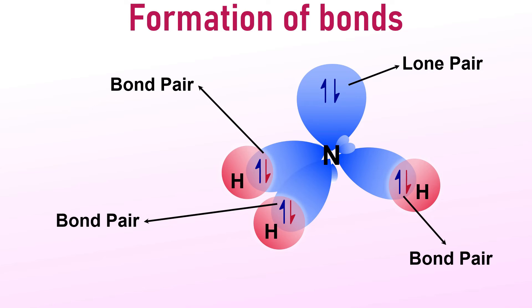A lone pair is attracted by only one nucleus, hence it occupies more space and exerts stronger repulsion on other electron pairs compared to the bond pairs.